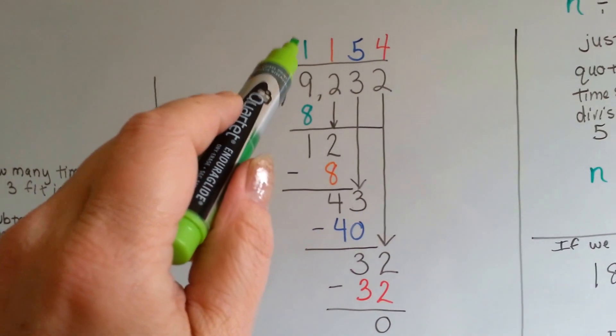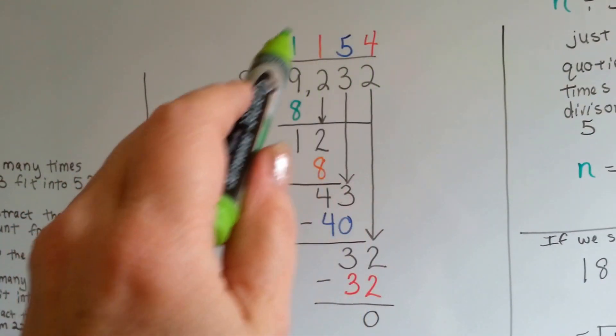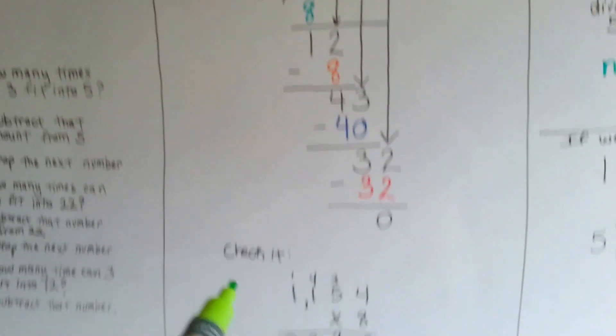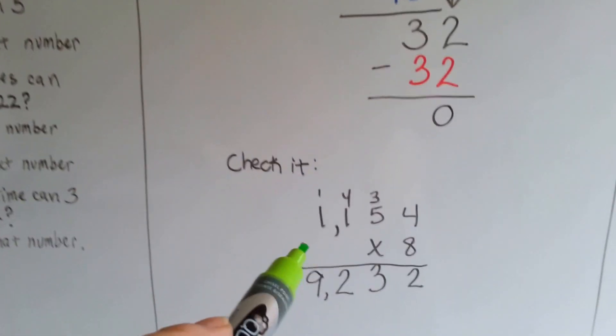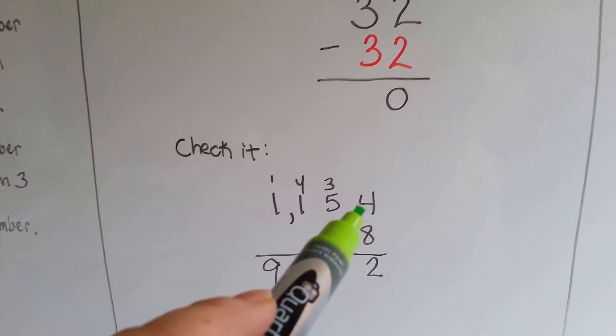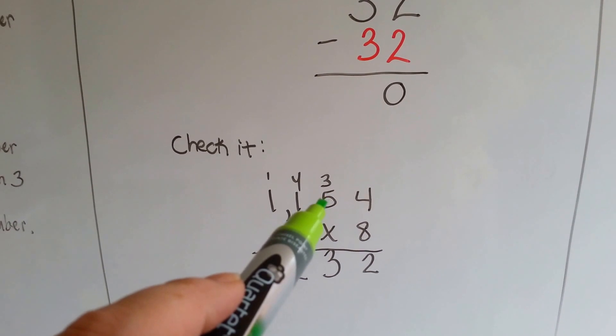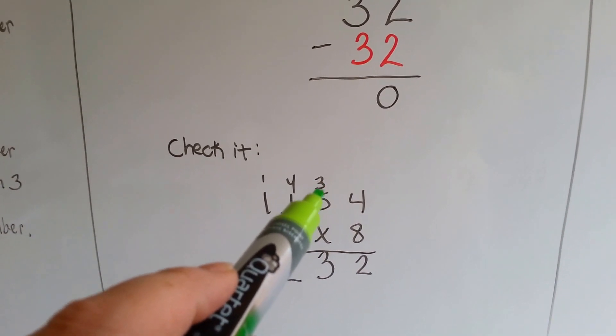Our quotient is 1,154. We multiply the 1,154 times 8 and see what we get. 8 times 4 is 32. We carry the 3 and put the 2 down. 8 times 5 is 40, plus the 3 we carried over is 43. We carry over the 4 and put the 3 down.